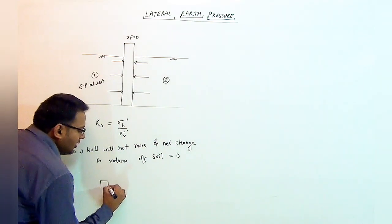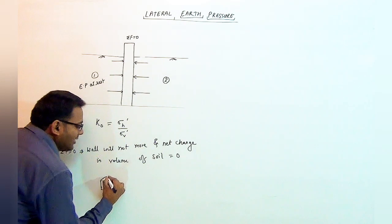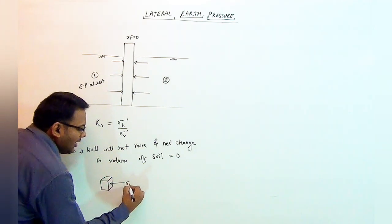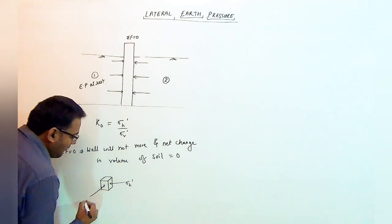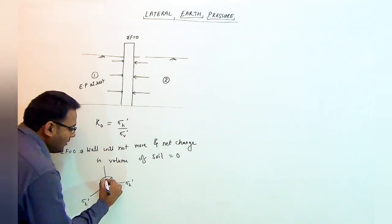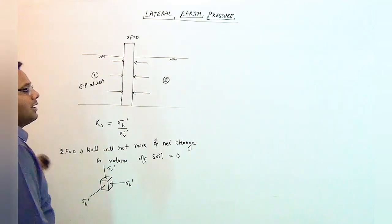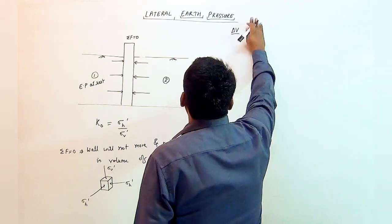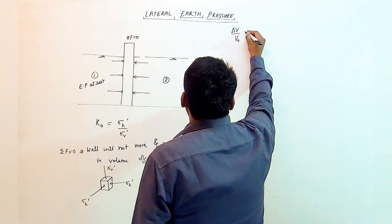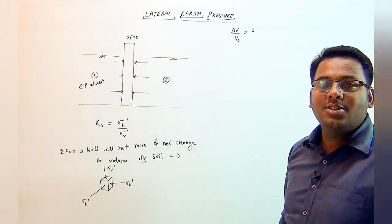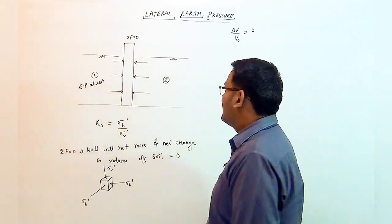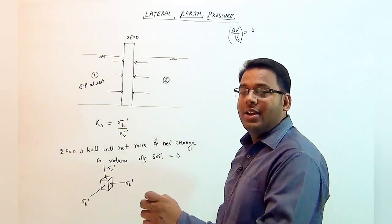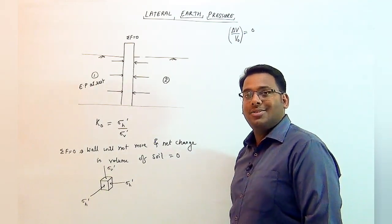If we study the soil, we can consider an element of the given soil. It is exerted by a horizontal stress on the two vertical planes, whereas vertical stress sigma v dash acts in the vertical direction. Hence, we can see that if the net change in volume is zero, that means the volumetric strain for this particular soil will also be zero.